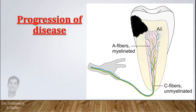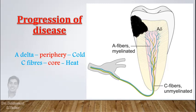As we all know, there are 2 types of nerve fibers in pulp: A-delta fibers and C-fibers. The outer layer of pulp, especially the pulpal horn and top part of pulp, contains A-delta fibers which transmit cold sensation, while the inner core layer of C-fibers transmits heat sensation. When A-delta fibers are inflamed, they become oversensitive to cold, and in the same way C-fibers become sensitive to heat and lead to severe pain.